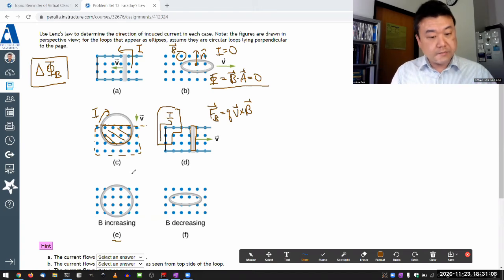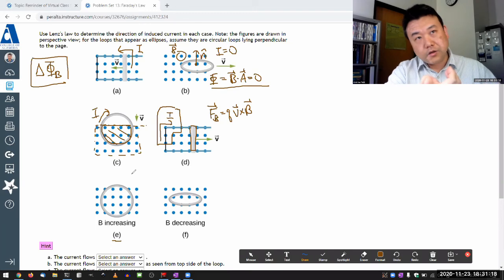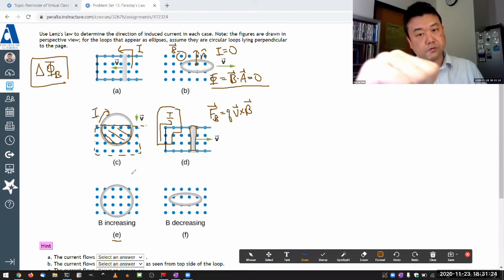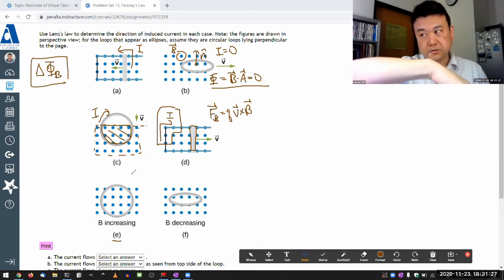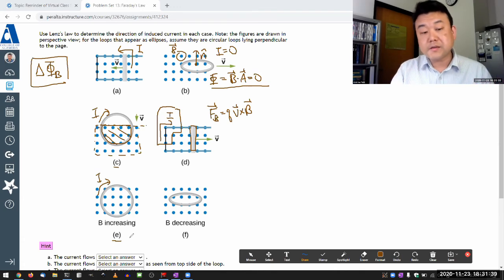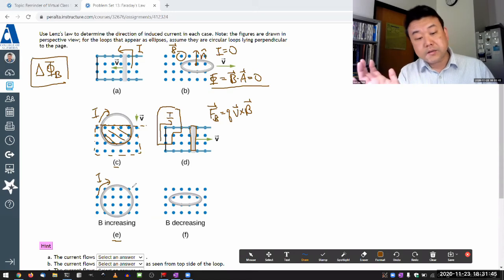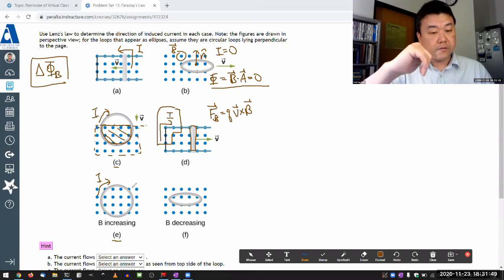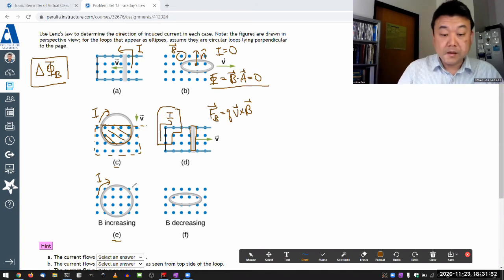So with increasing magnetic field, magnetic field pointing out of the screen and increasing, that means change of flux is out of the screen. So the direction of magnetic field due to induced current has to be opposing that. So the direction of the induced current will be into the screen. So this direction is the direction of current or clockwise direction. And C and E, the results are very similar. Both of them involve increasing magnetic flux. So clockwise current gets induced so that the induced magnetic field opposes that change.